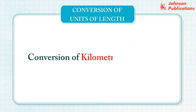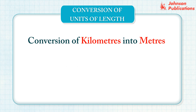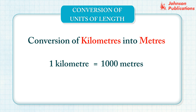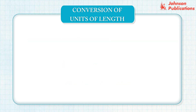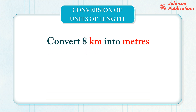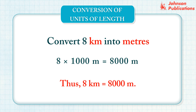Let us learn the conversion of kilometers into meters. We know that one kilometer equals 1,000 meters. To convert kilometers into meters, multiply the kilometers by 1,000. For example, multiply 8 kilometers by 1,000. Thus, 8 kilometers equals 8,000 meters.